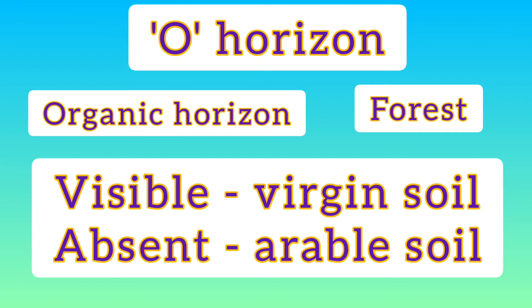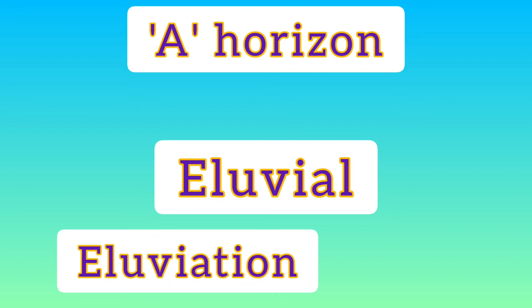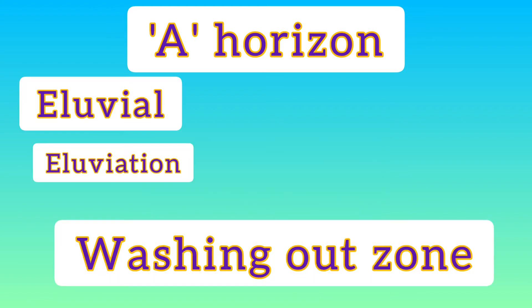Virgin soil is soil that has never been cultivated, and arable soil is the soil where crops are grown. The next is the A horizon, also known as the eluvial horizon, because eluviation takes place in this particular horizon only.